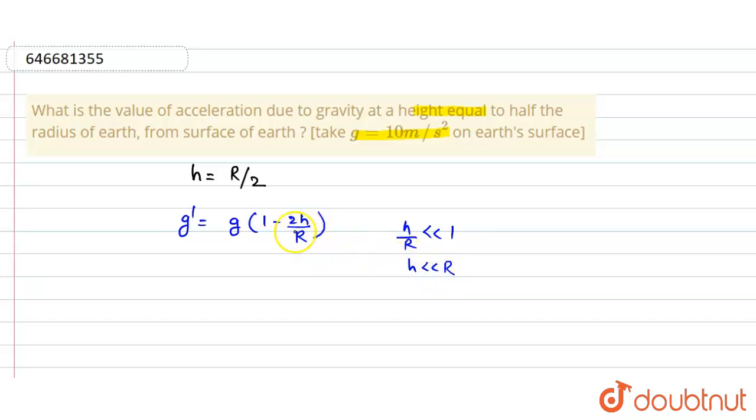And we see here that h is much less than R, so this formula can't be used here. So we use the formula that is acceleration due to gravity, g dash is equal to g divided by 1 plus h by R whole squared. So we put the value and we get the value of g is equal to 10.